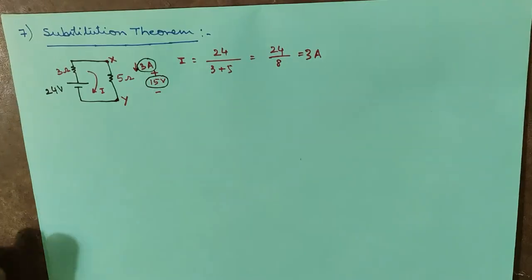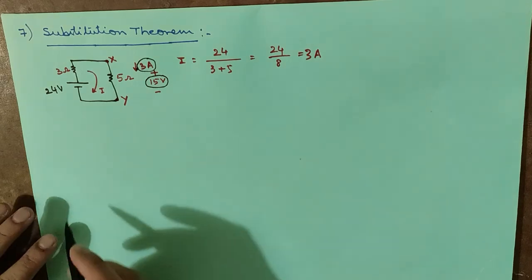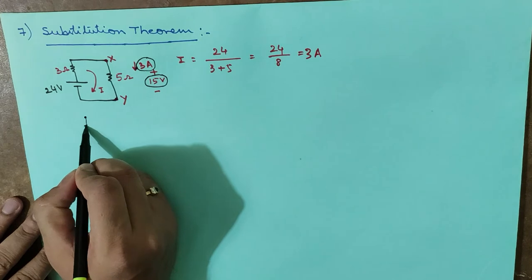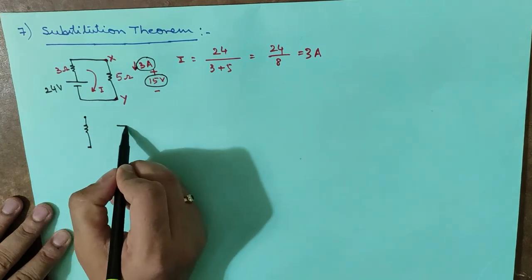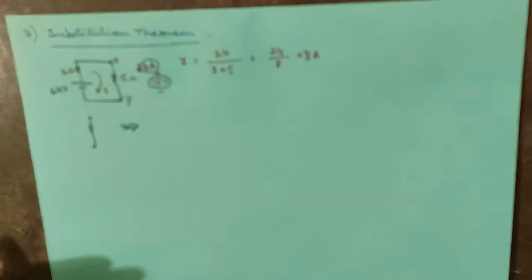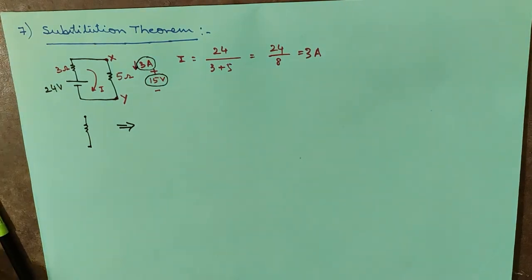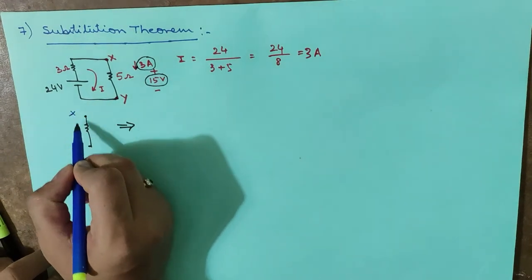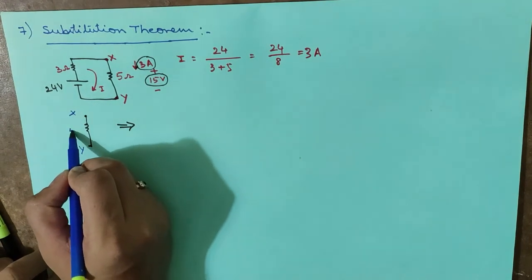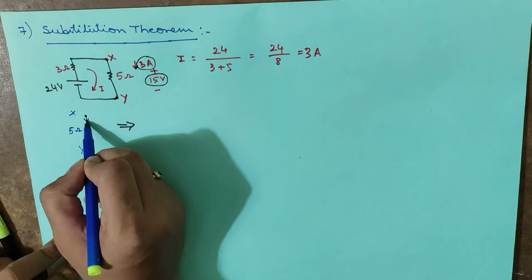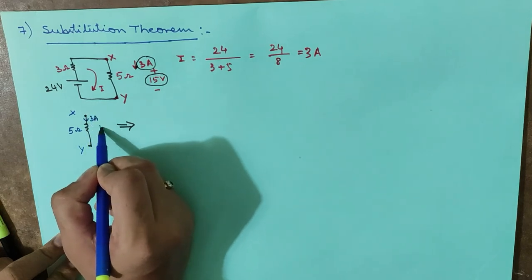Now I can substitute this branch — I can remove this part and replace it with something else. This is substitution. The element between X and Y is the 5 ohm resistor, with 3 amperes of current passing through it and 15 volts across it.